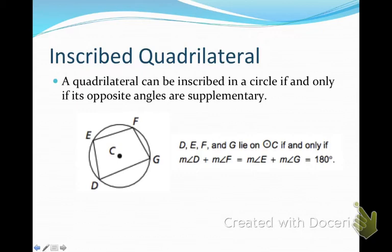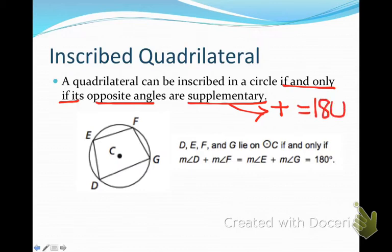And it's talking about an inscribed quadrilateral. Now remember a quadrilateral is a four-sided figure. A quadrilateral can be inscribed in a circle if and only if its opposite angles are supplementary. Now remember supplementary means adding up to equal 180 degrees.